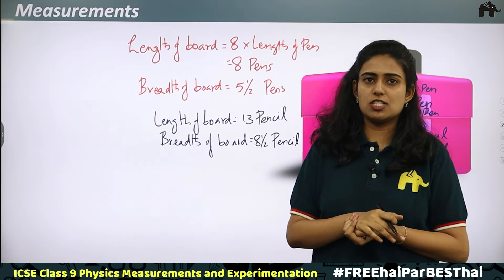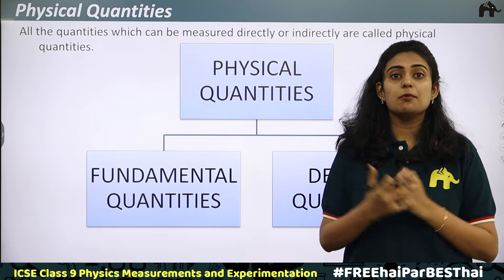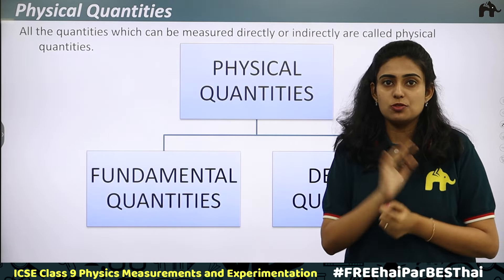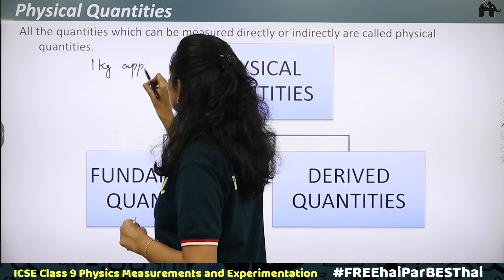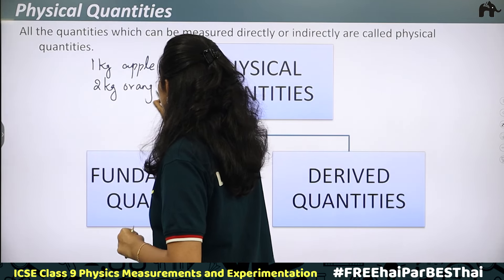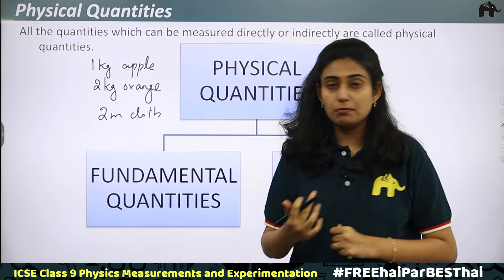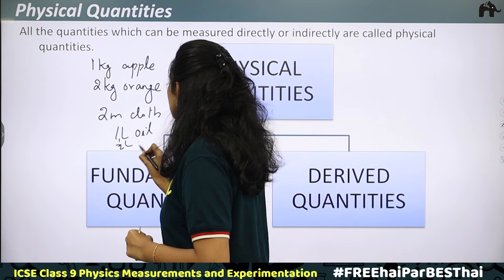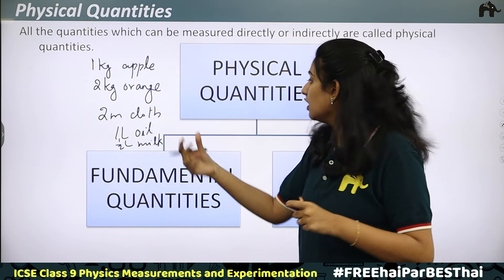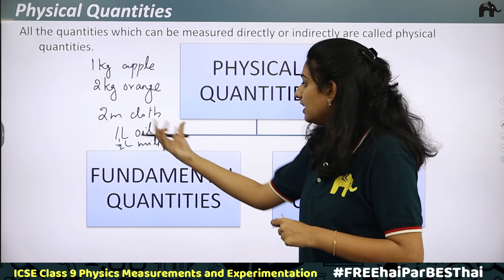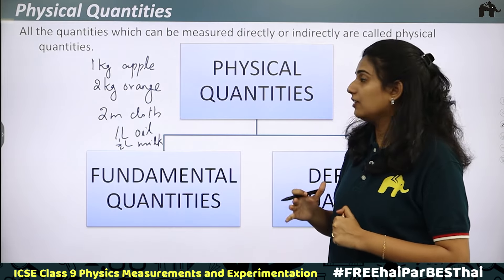Now let us understand what to measure. There are quantities that can be measured either directly or indirectly. For example, when your mother sends you to the shop, she says 1 kg of apple or 2 kg of orange - mass is measured. You buy 2 meters of cloth - length is measured. You buy 1 liter of oil or half a liter of milk - volume is measured. The quantities that can be measured directly or indirectly are called physical quantities.